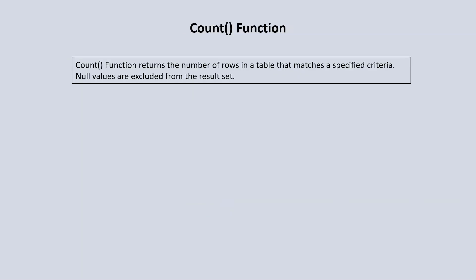COUNT functions are used to return the number of rows in a table that match a specific criteria. When we use the COUNT function, it excludes null values. So whenever the result set is returned, all of the results have to have a value — they have to be not null. Let's switch over to SQL Server and see how we use the COUNT function.